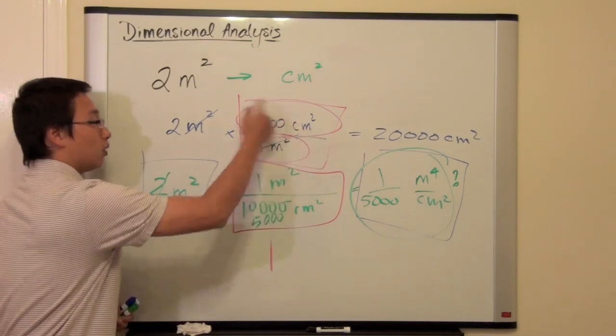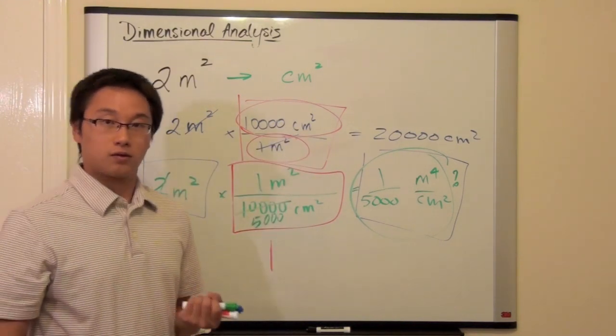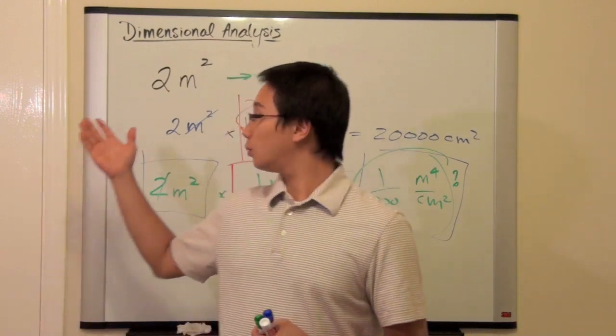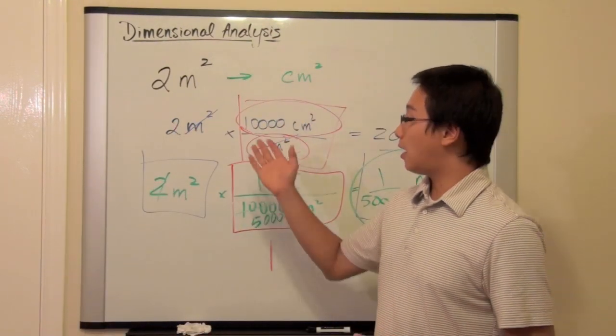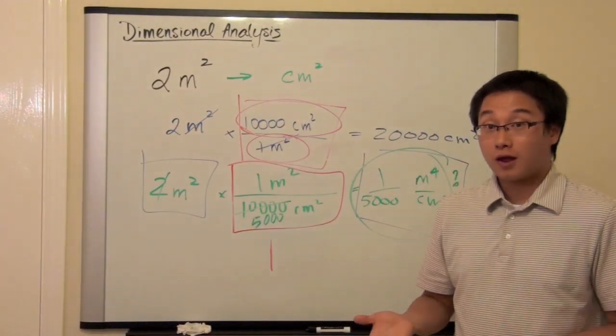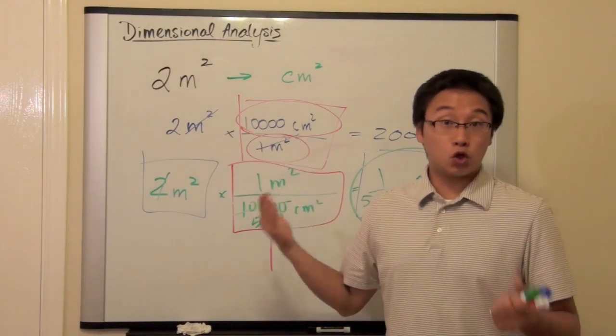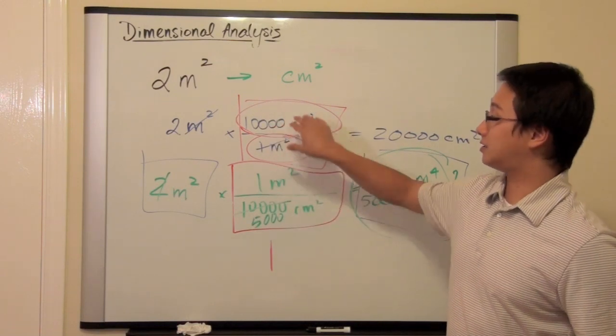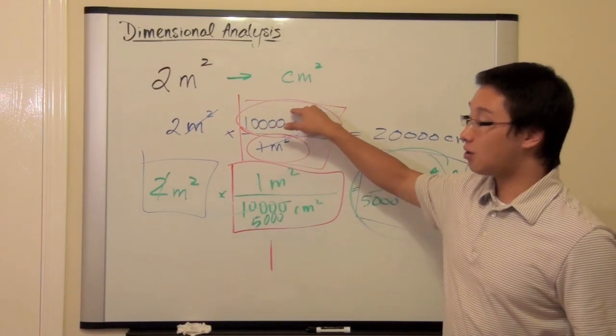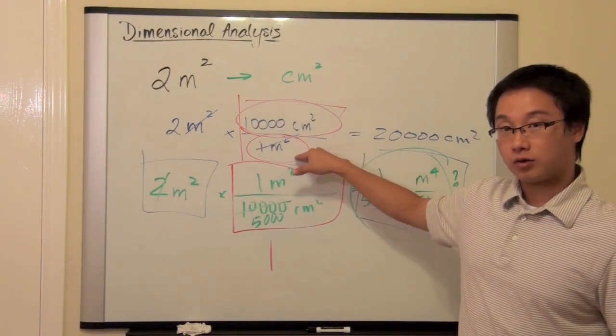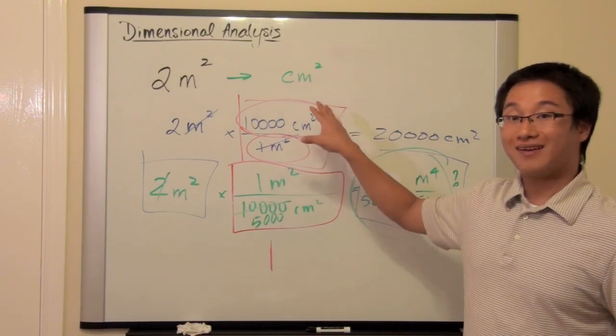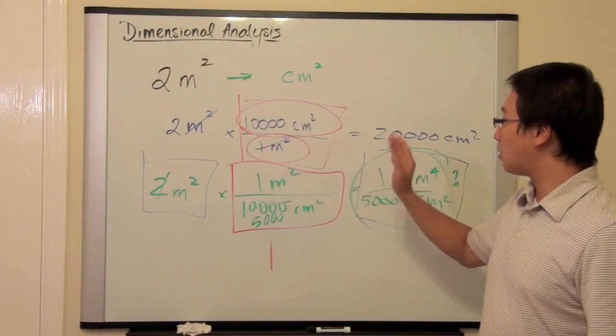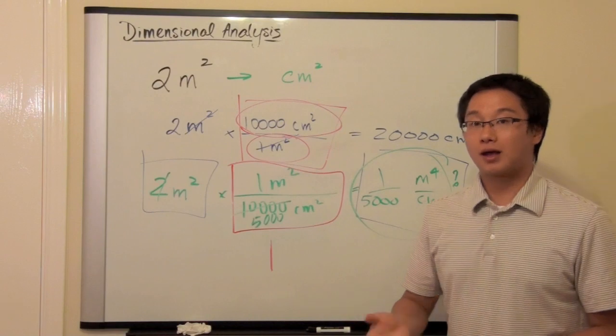So, now, if you understand what's going on with the square, with the number, with the dimension in square, and hopefully you should understand the same thing if it happens to be a cube or to the 4th power or whatever. Because we hold the same concept. Because we hold the same concept that the numerator has to equal the denominator, and the overall is equal to 1. So, this is how we get through the calculation.